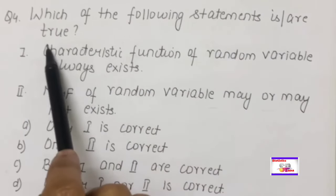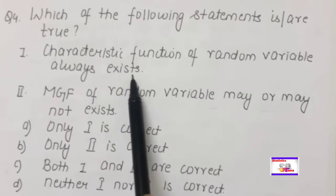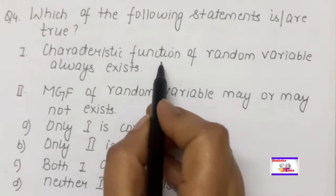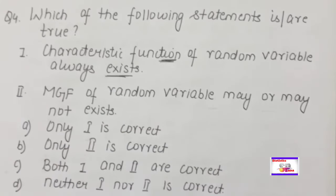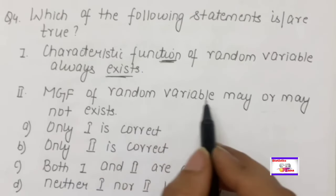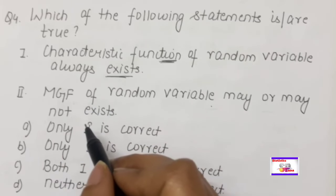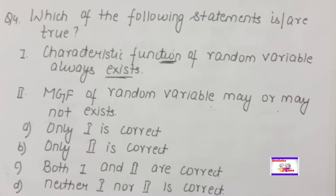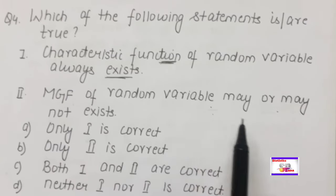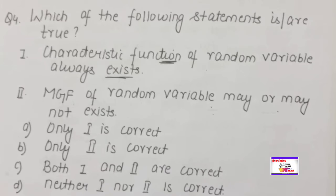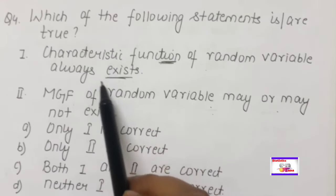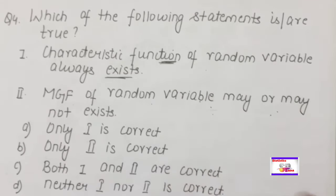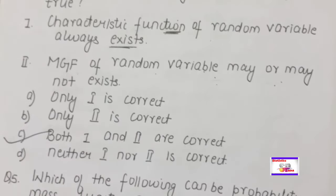Which of the following statements is/are true? Statement 1: The characteristic function of a random variable always exists. Statement 2: The MGF of a random variable may or may not exist. Both statements are correct — the characteristic function always exists, whereas the MGF may or may not exist. So the answer is both 1 and 2.